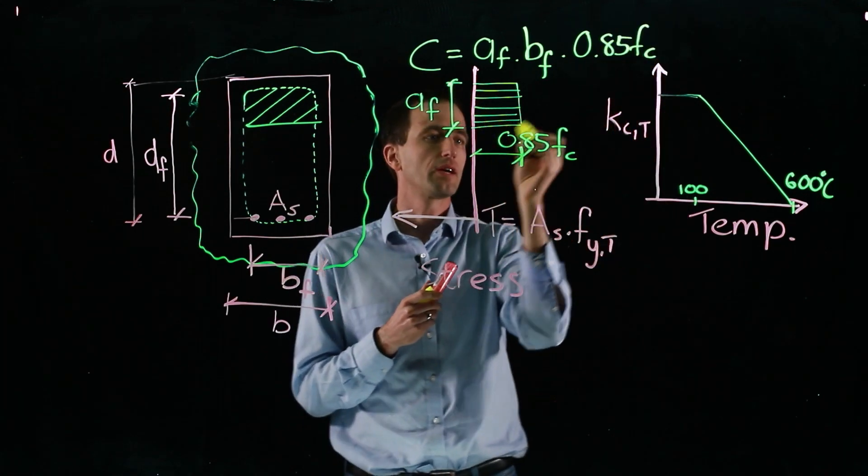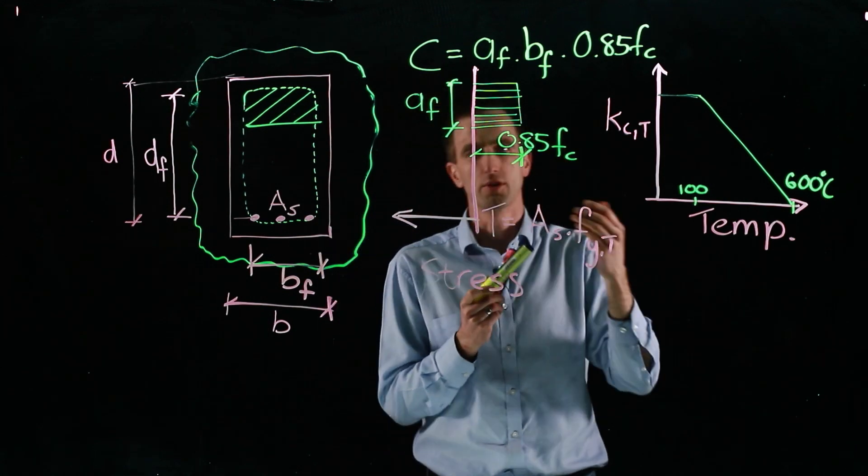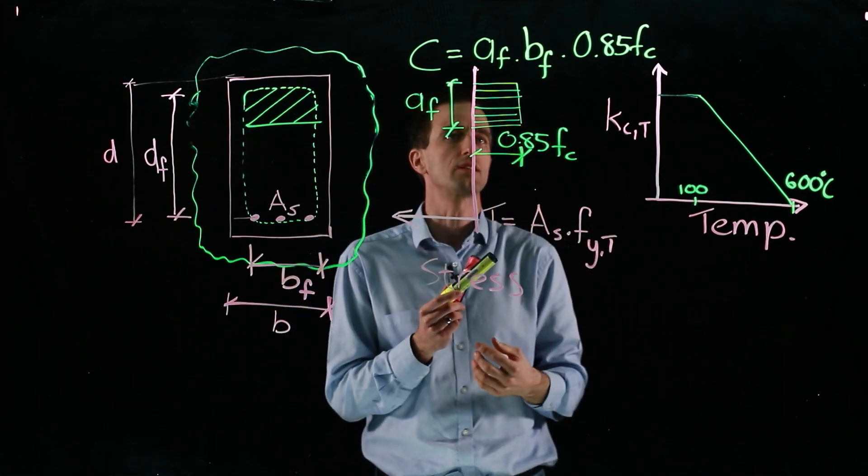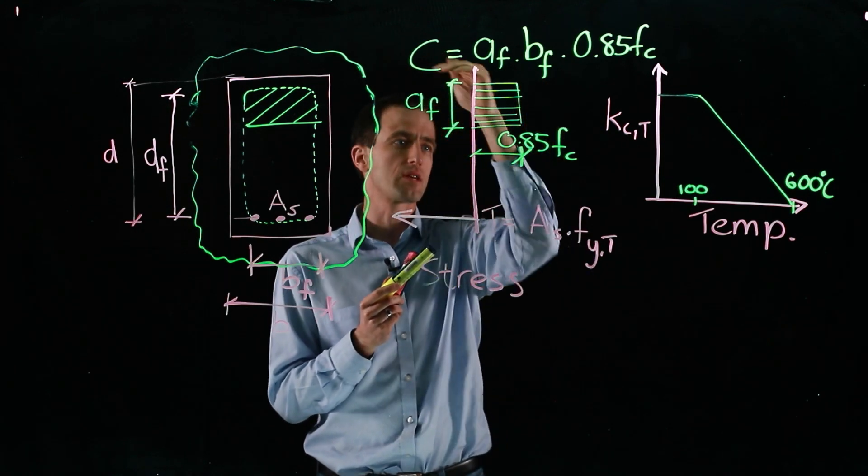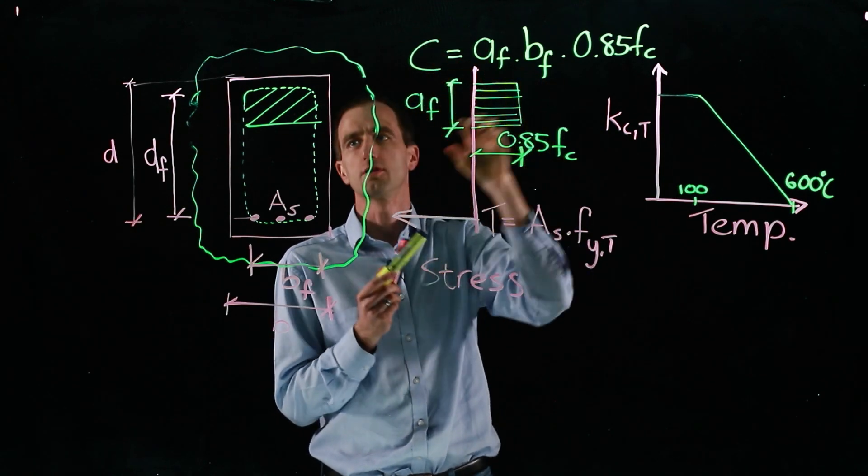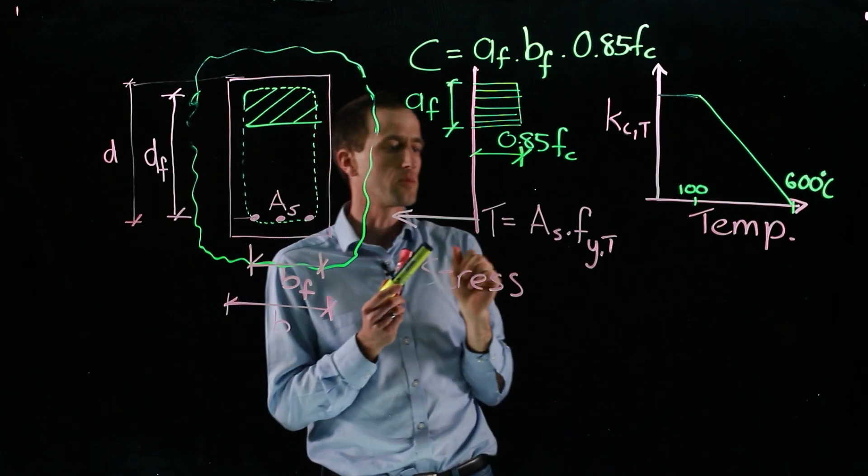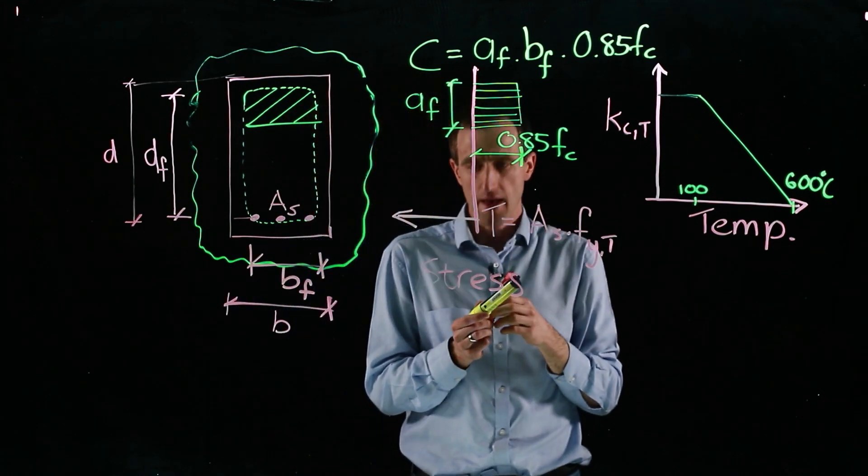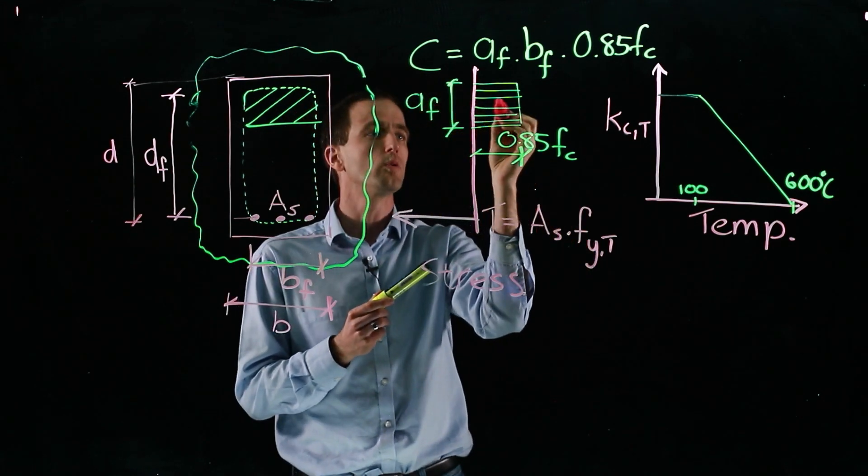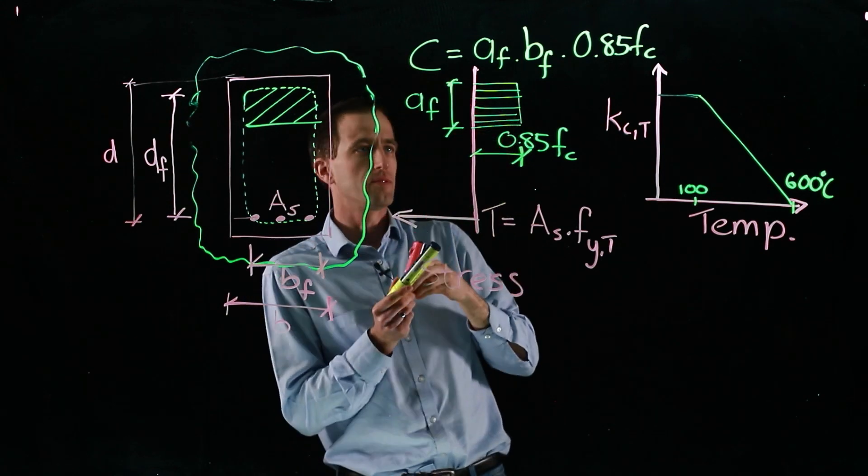There's slight variations in the 0.85 factor. Your code might use 1 divided by 1.2 for the accidental limit state. But generally this gives our compression force in our top remaining compression block and our tension force. And then to get the final moment, all we need to do is multiply.